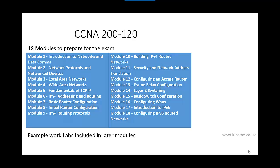The course also covers establishing point-to-point connections and frame relay connections. Personally, I think the 200-120 exam is the better route — it's only one exam and you won't get as much in-depth detail on topics as in ICND1 and ICND2. To summarize, this course will cover topics from ICND1 and ICND2. Without further ado, let's move on to Module 1: Introduction to Networks and Data Communications.